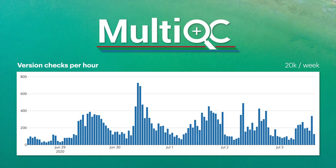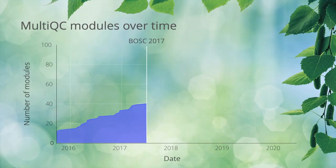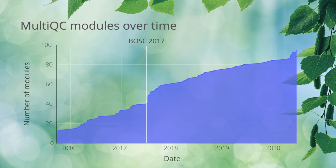What started off as a small internal reporting tool has become very popular now, with in excess of 20,000 different runs per week, which is astonishing. MultiQC has grown quite a lot over the five years that I've been working on it. Back in 2017, when I presented it at BOSC in Prague, it supported just under 40 different bioinformatics tools. Now it's grown to just under a hundred different tools, and you can see a nice tick just after the BOSC, which was the Codefest.